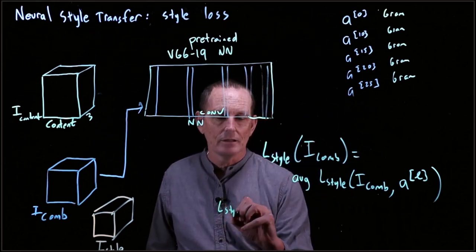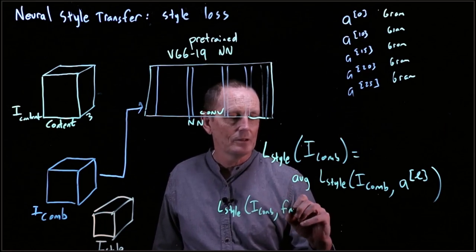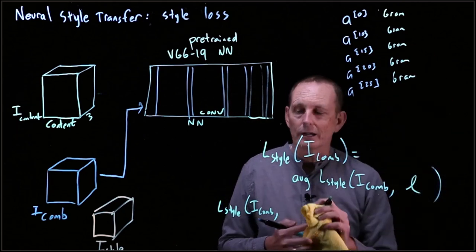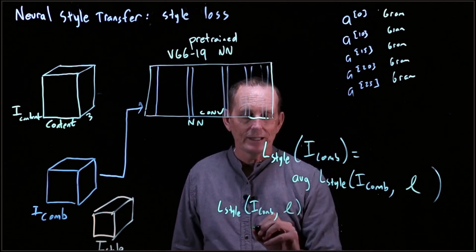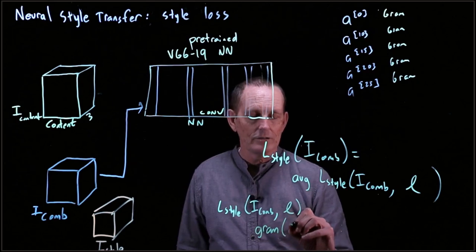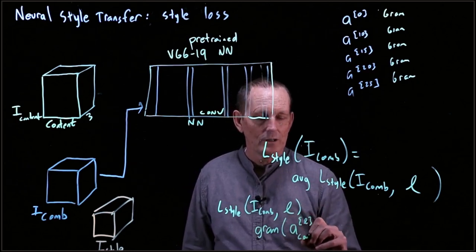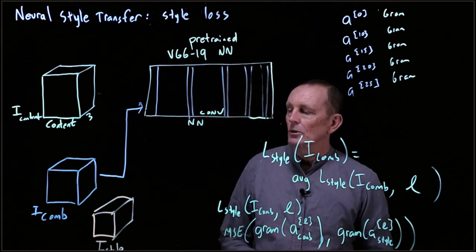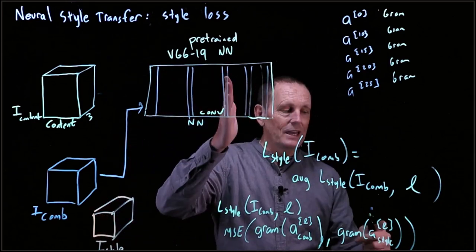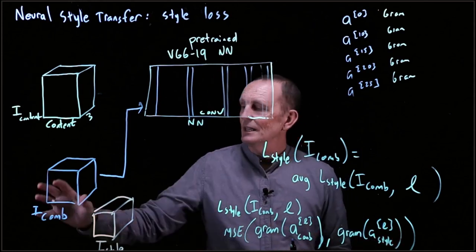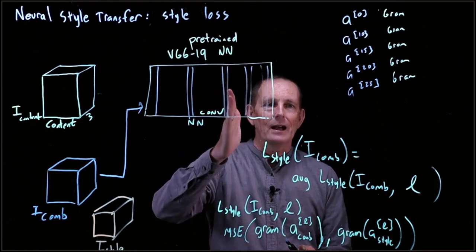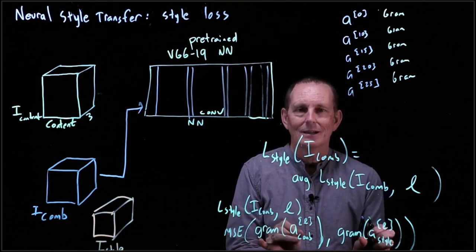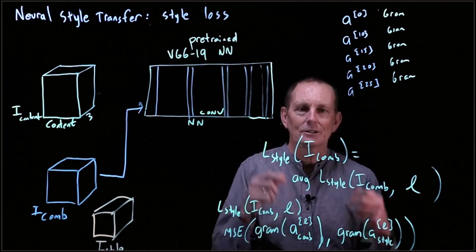The loss with respect to a particular layer is computed by taking the Gram matrix of the activations at that layer for the combination image, and comparing it against the Gram matrix of the activations at the same layer for the style image. We feed the style image in, pull out the layer-L activation, compute its Gram matrix; do the same for the combination image; then compute the mean squared error — really a sum of pointwise mean squared errors — between those two Gram matrices.